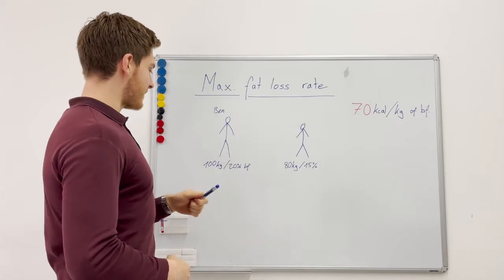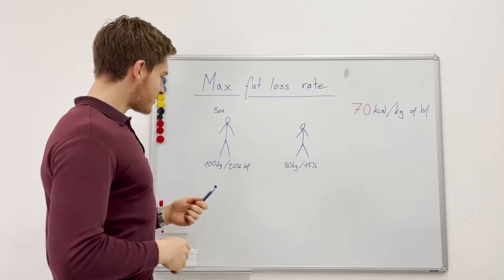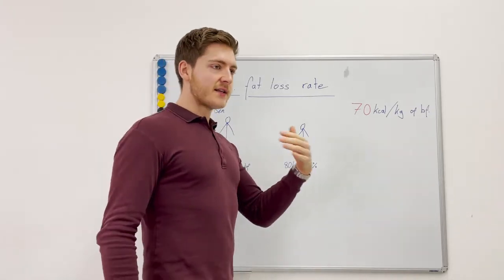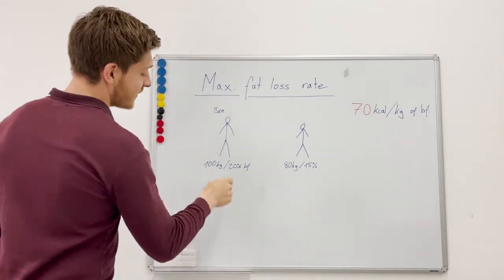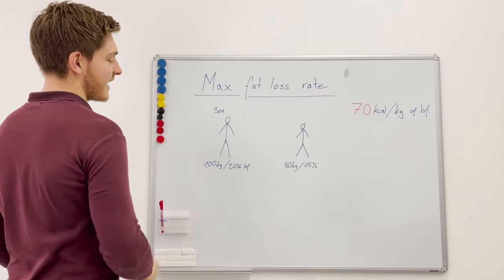Ben decides 'hey I want to work on that, I want to get into better shape.' So what he does is he estimates his calories, sees okay this is how much he can eat, and now with the knowledge that we have with this number and his body stats.